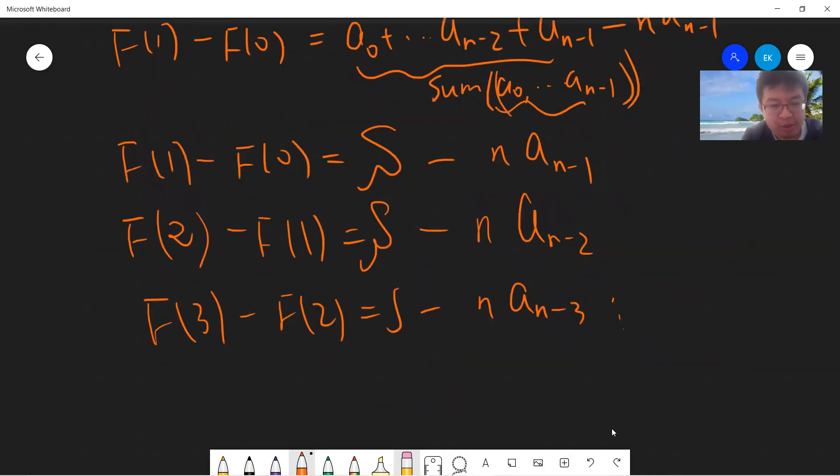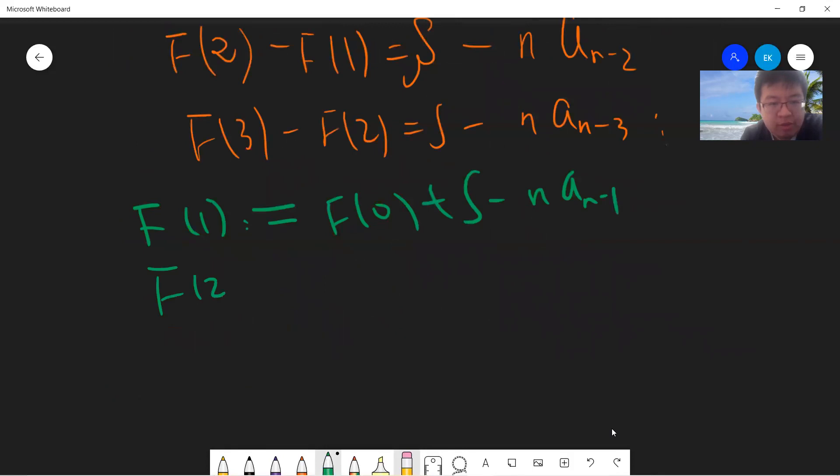Once you get f(0), you just update f(1) to be f(0) plus S minus n times a_(n-1), and you keep going. You can define f(2) to be f(1) plus S minus n times a_(n-2). You only need one number, f(0), and then you keep doing the update.